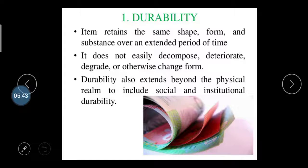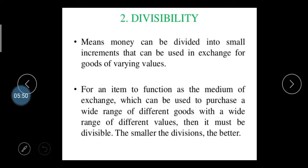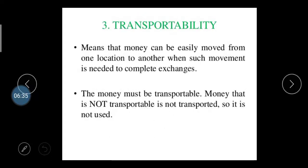Second is divisibility — money can be divided into smaller increments that can be used in exchange for goods of varying values. You can easily divide money into 5 rupees, 10 rupees, 20 rupees, 2,000, or 20,000 rupees. Before money was introduced, products could not be divided. For an item to function as a medium of exchange, it must be divisible into smaller denominations — the smaller the divisions, the better for purchasing and selling activities.